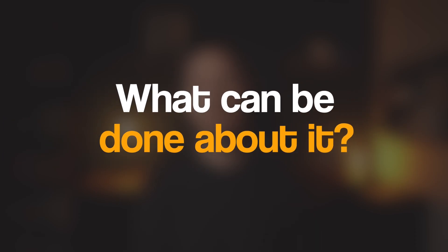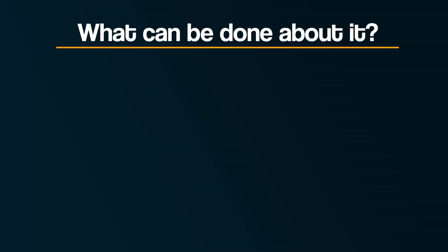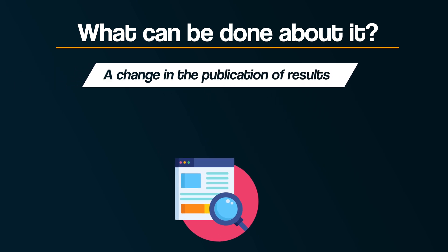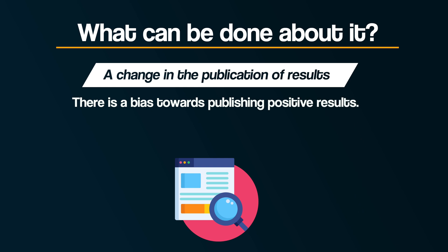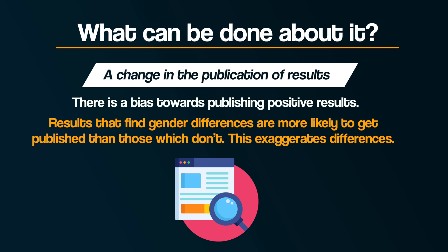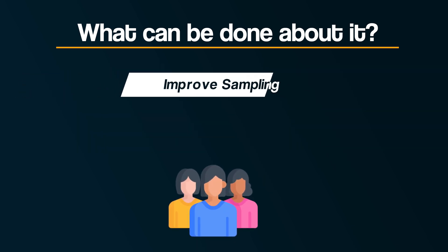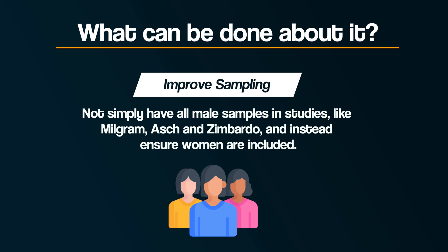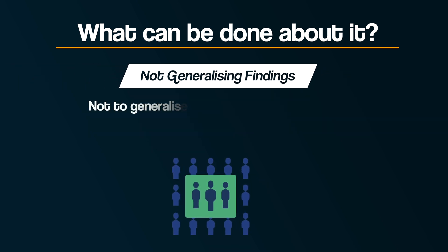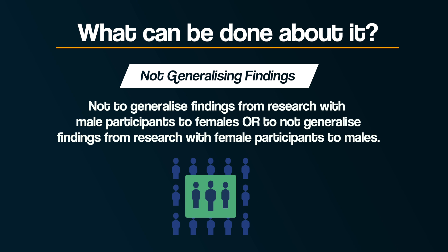So has gender bias been an issue in psychology? Yes, clearly. Psychology therefore needs to be reflexive — in other words, it needs to reflect on itself and make changes. In order to reduce alpha bias, a change is needed in the publication of results, as there is a bias towards publishing positive results. Results that find gender differences are more likely to get published than those which don't, and this can exaggerate differences leading to alpha bias. In order to reduce beta bias, one simple way is to not simply have all-male samples — as in studies like Milgram, Asch and Zimbardo — and instead ensure women are included. Another way is not to generalise findings from research with male participants to females, or vice versa.